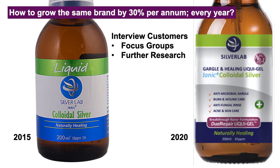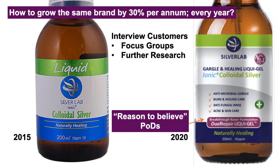We might interview 300 customers after that to find out if the label will really work. On this new label, we came up with a breakthrough nano formulation called dual repair liquid — not just ordinary liquid, but dual repair liquid. That's what we often call in marketing a reason to believe, or a POD — a point of difference. The label on the right has got a bigger POD than the label on the left.